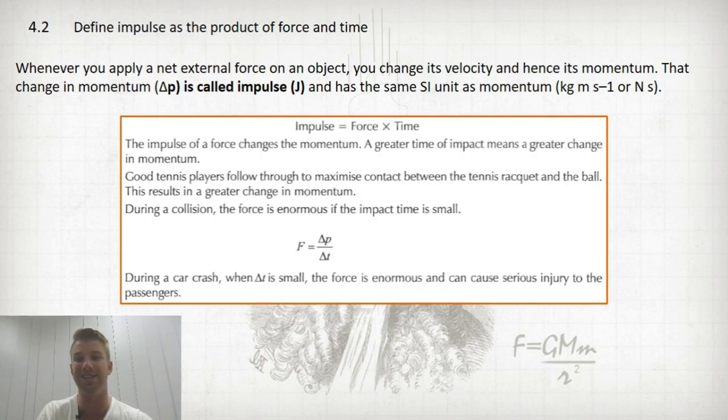During a collision, the force is enormous. F equals P over T. During a car crash where the time is small, the force is enormous and can cause serious injury to the passengers. That's an example of this topic about cars and collisions.